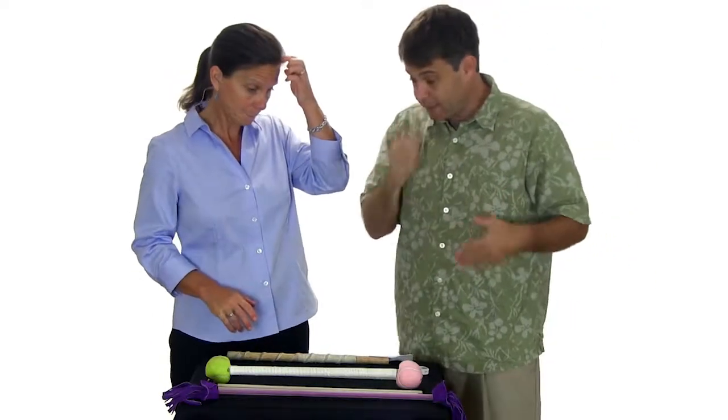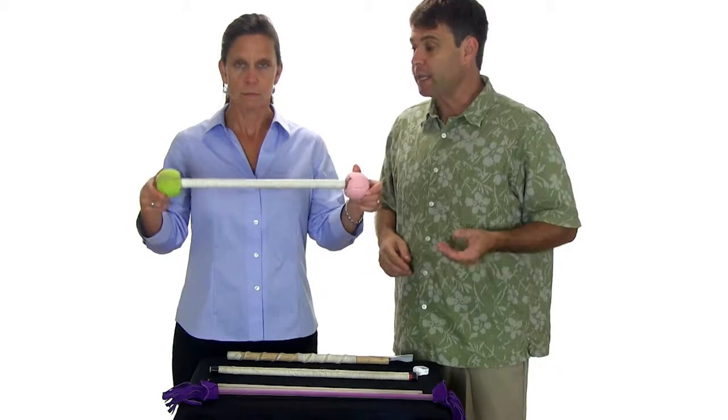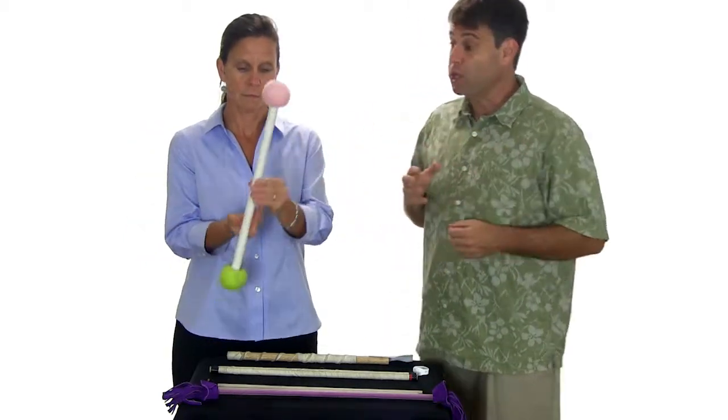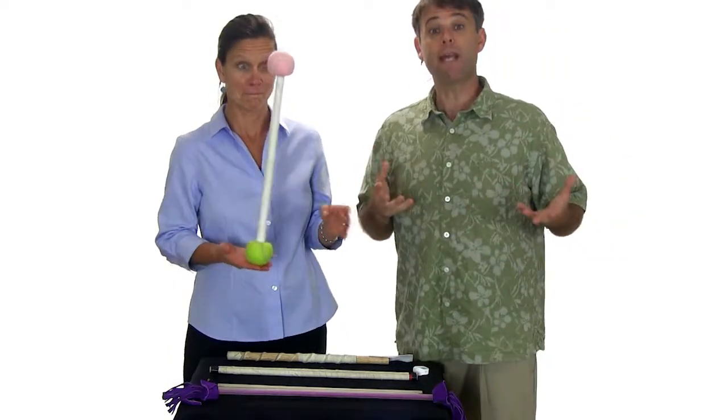There's lots of different ways you can make this. We're just going to show you a couple of different examples. The most basic one is by taking a dowel, about a three-quarter inch diameter dowel, at about 24 inches, and getting two tennis balls.